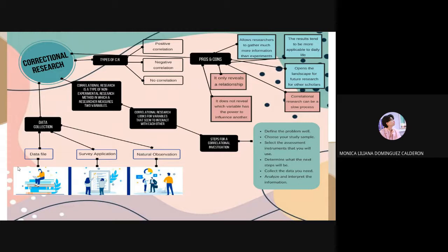Some cons about this research are, for example, that it only reveals a relationship and it doesn't reveal which variable has the power to influence another, and the correlational research can be a very slow process.